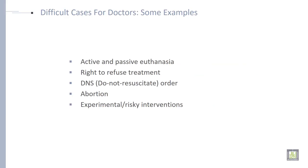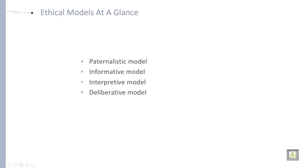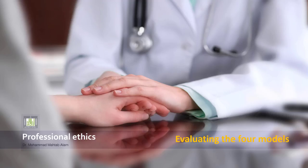Difficult cases for doctors include examples such as active and passive euthanasia, right to refuse treatments, DNR (do not resuscitate) orders, abortion, and experimental risky interventions. The ethical models at a glance include the paternalistic model, informative model, interpretive model, and deliberative model — all of which will be discussed one by one in the next lecture.